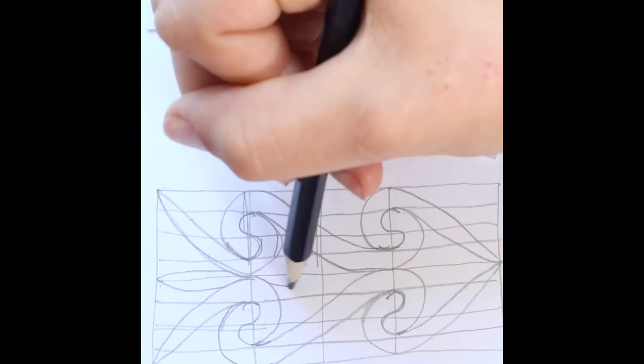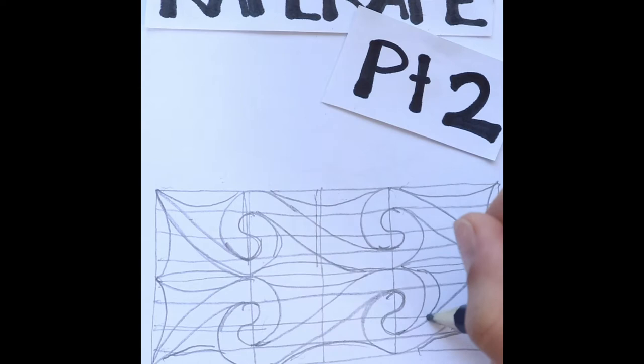Make curved lines around the edges of your rectangle, trying to keep things as even as possible. Fill in the gaps of the design with more curved lines flowing off the lines you've already drawn.